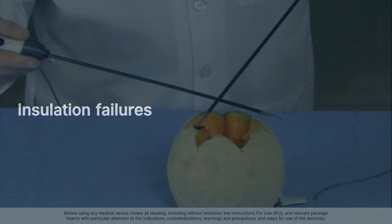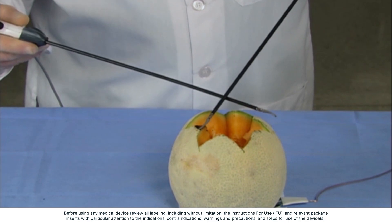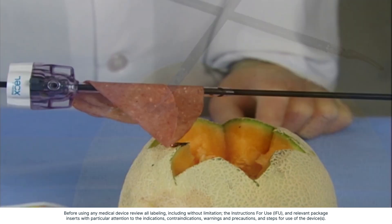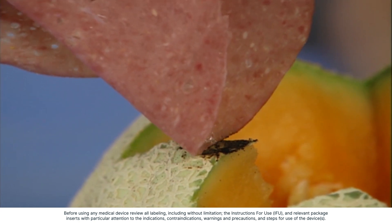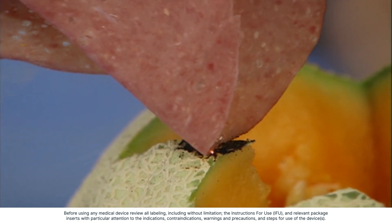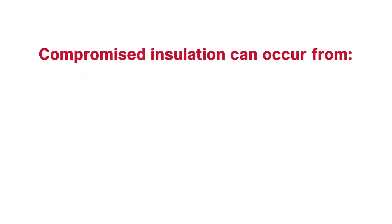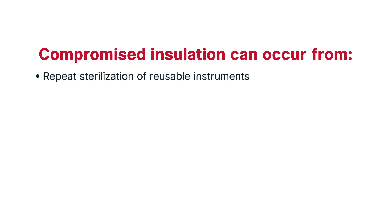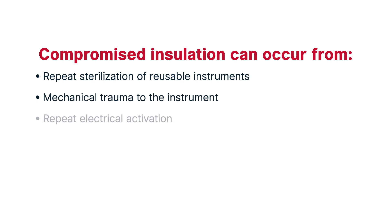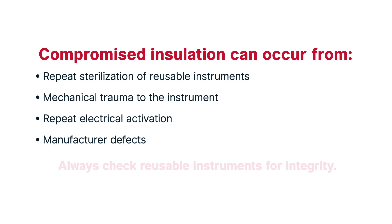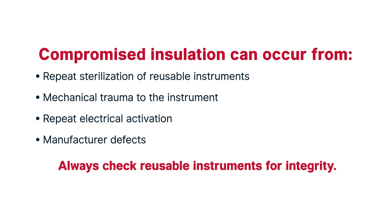Insulation failures. Insulation failures occur when an active electrode's protective coating is compromised. These occurrences can create an alternate route for electricity to flow. If the current is concentrated, it can cause significant injury. As noted earlier, smaller areas of contact have a greater likelihood of injury due to current concentration. Due to the worry of small holes going unnoticed, insulation failure on reusable instruments is a concern. Compromised insulation can occur from: repeat sterilization of reusable instruments, mechanical trauma to the instrument, repeat electrical activation, or manufacturer defects. Before performing monopolar electrosurgery, always check reusable instruments for integrity.